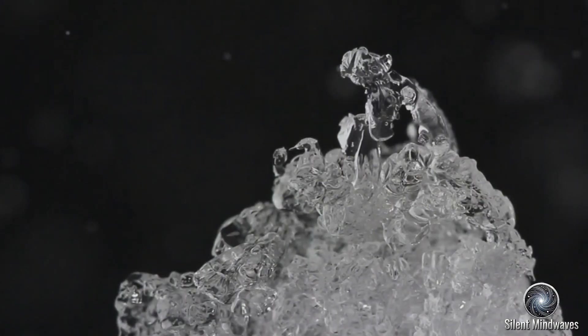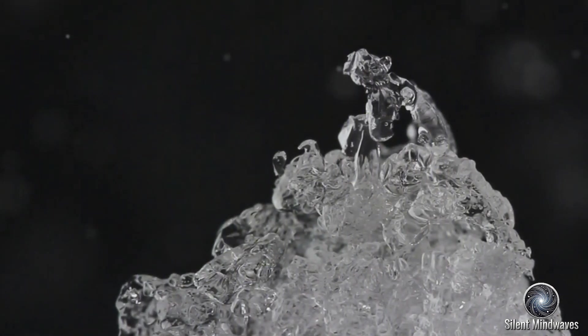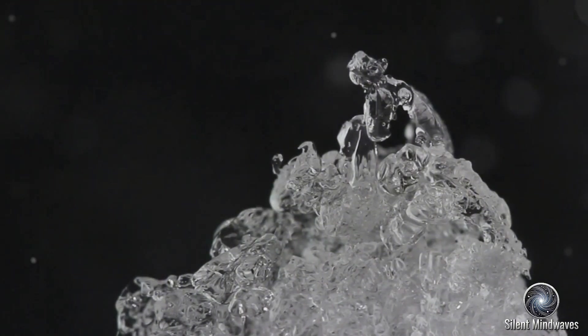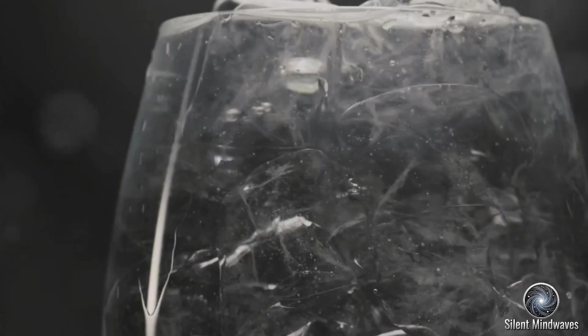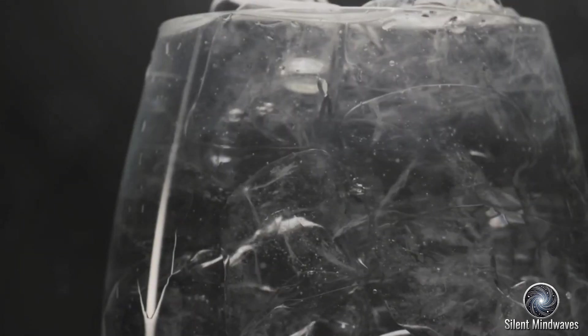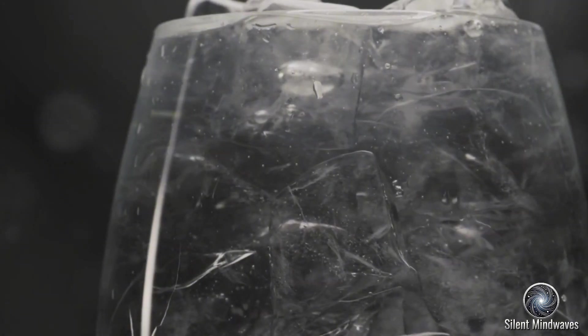As the ice absorbs heat from its surroundings, its molecules gain energy and begin to vibrate more vigorously. This energy transfer is a key aspect of entropy, as it leads to increased molecular motion. This increased molecular motion disrupts the ordered structure, eventually causing the ice to melt into liquid water, a state of higher entropy with more freedom of movement for the water molecules. The transition from solid to liquid is a clear demonstration of entropy at work.